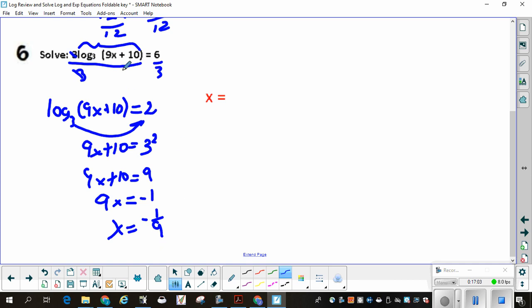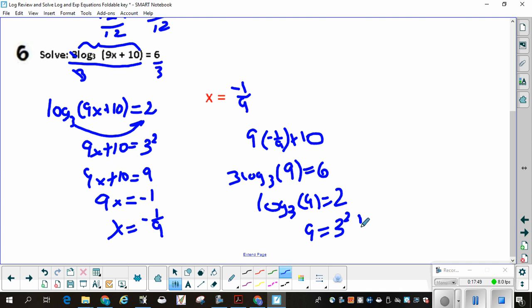If I put negative 1/9 in, 9 times negative 1/9 plus 10, that's negative 1 plus 10, which is 9. So I wind up with 3 log base 3 of 9 is equal to 6. Log base 3 of 9 is equal to 2. 9 is equal to 3 squared. That's true. So it checks. This is just where I am checking my solution.